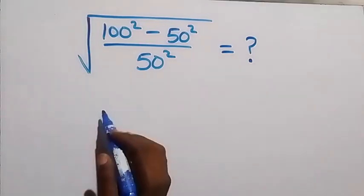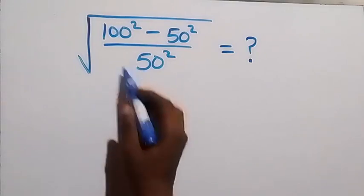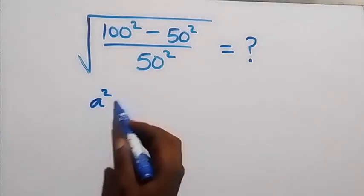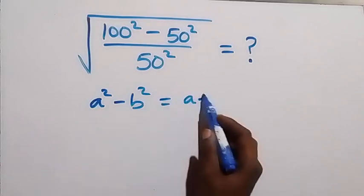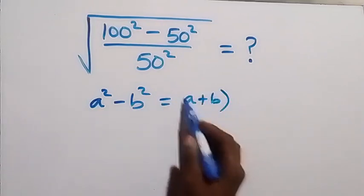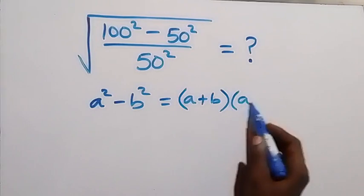We can apply the difference of two squares here. When we have a² minus b², this can be written as (a + b) times (a - b).